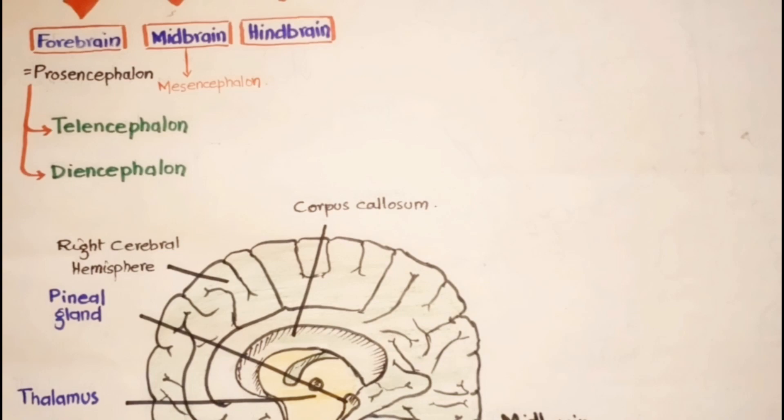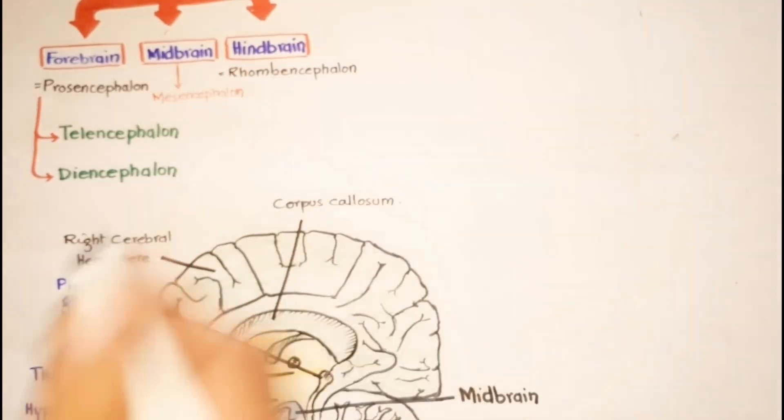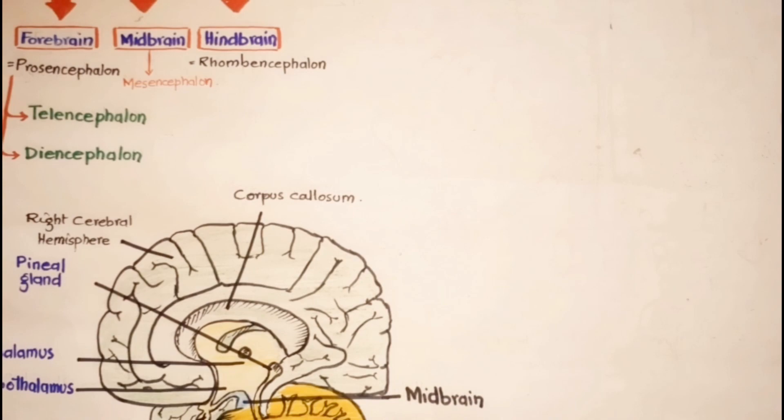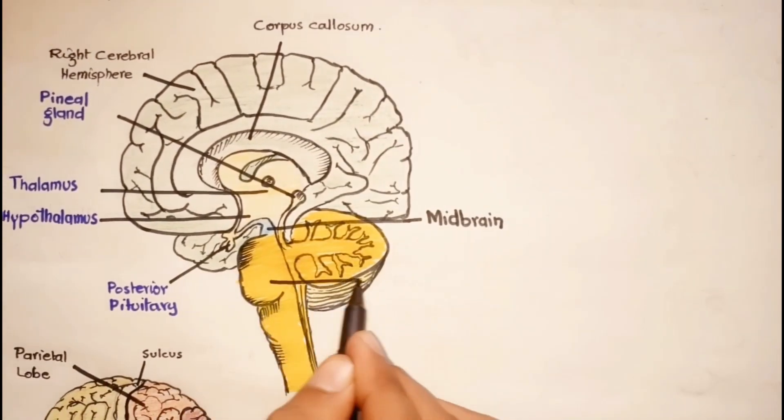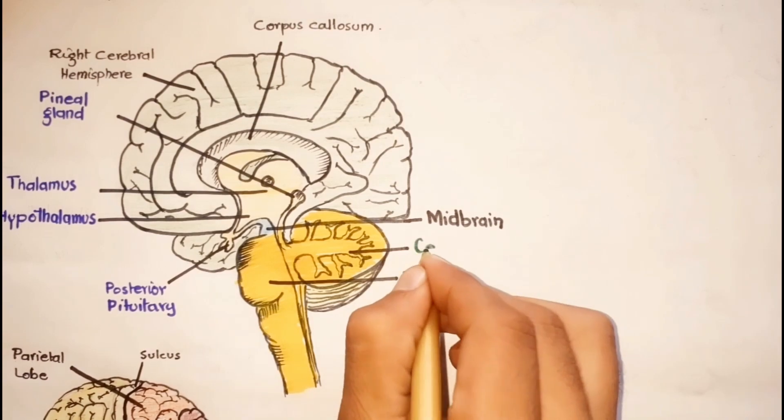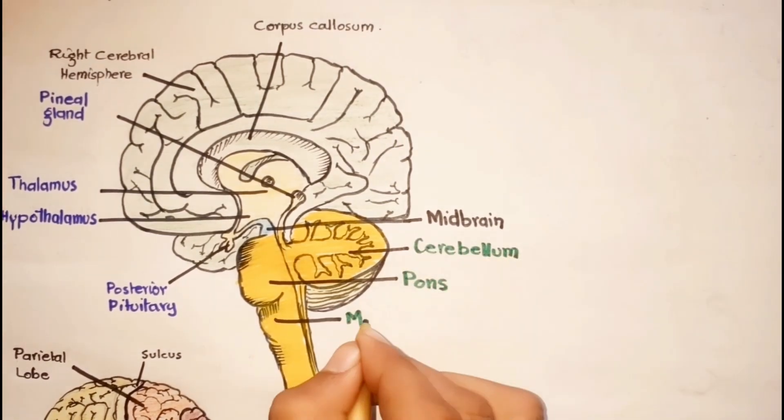The last part is the hindbrain, also known as rhombencephalon, consisting of parts like pons, cerebellum, and medulla oblongata.